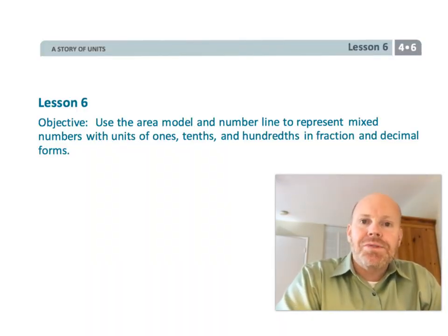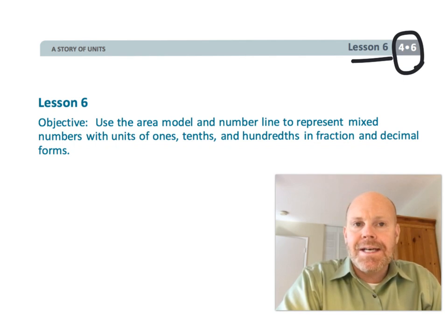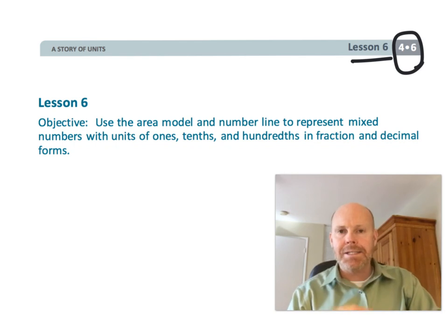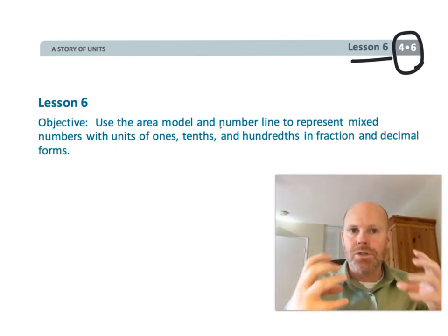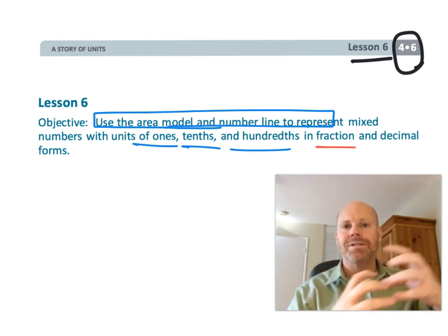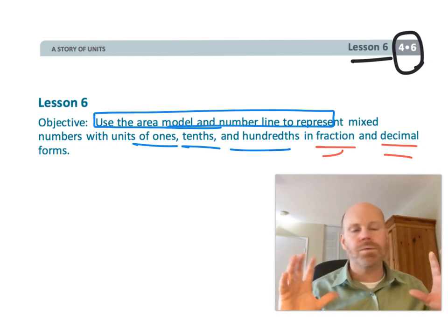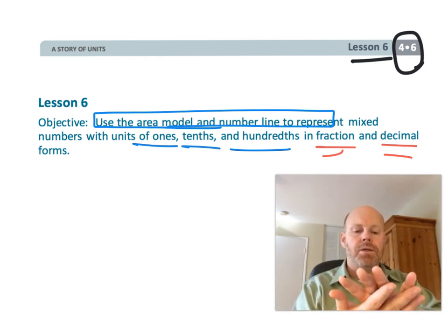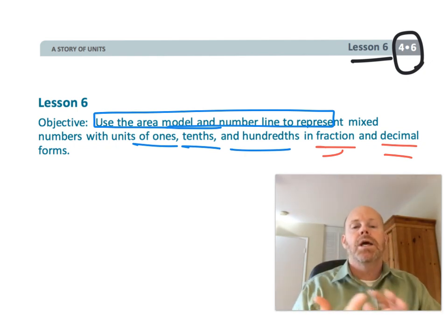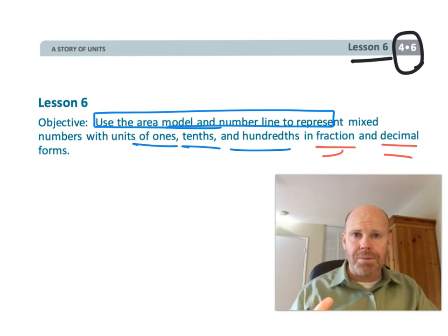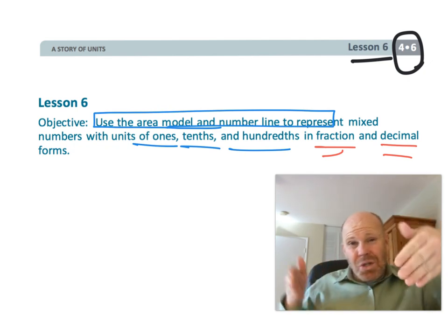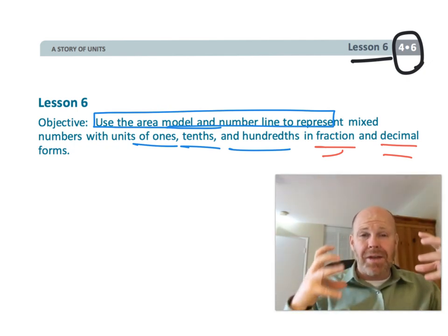This is fourth grade module six, lesson six. Students are going to be using the area model and the number line to understand mixed numbers — how they look in terms of ones, tenths, and hundredths, and how fractions and decimals all relate to one another. It's a beautiful lesson using best practice, allowing students the opportunity to compare and contrast a variety of representations so they can really understand decimals.